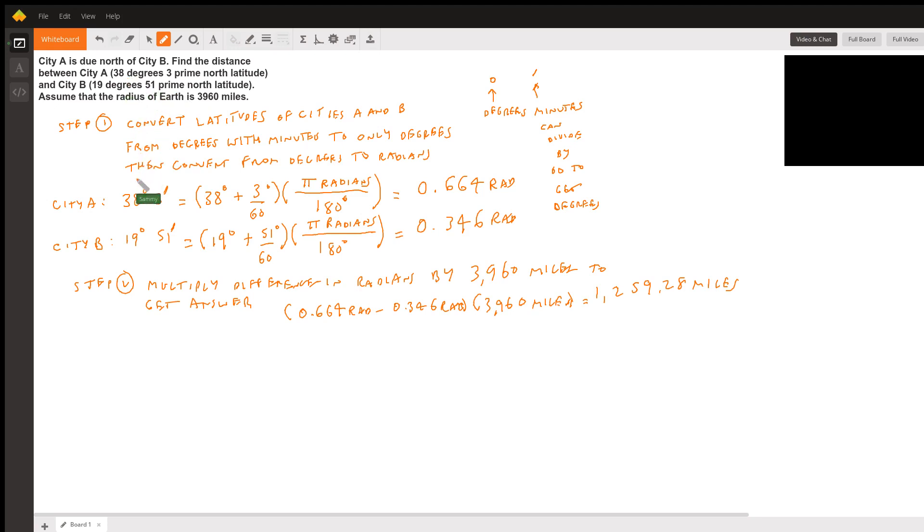This is a degree symbol, just a circle, and then the minutes is like this little dash right here. The minutes we can divide by 60 to get degrees. That's basically the first part.